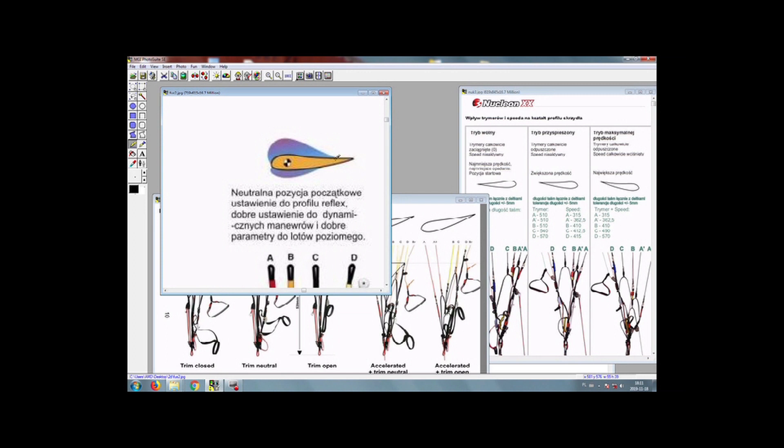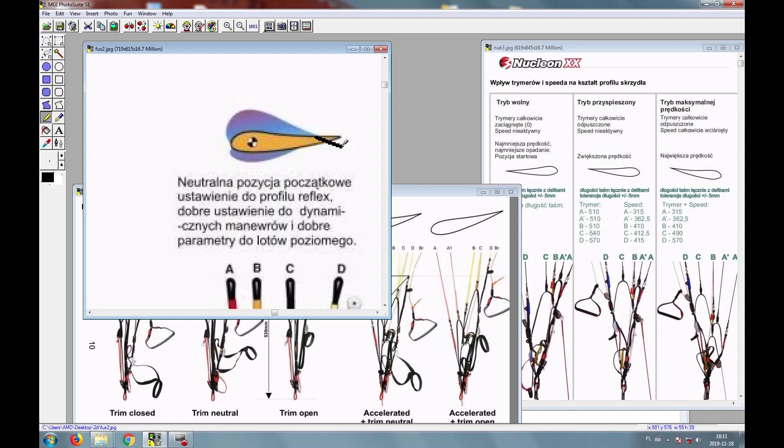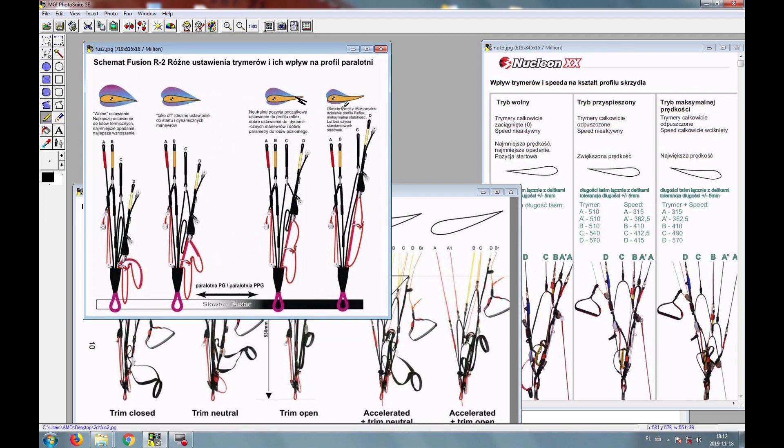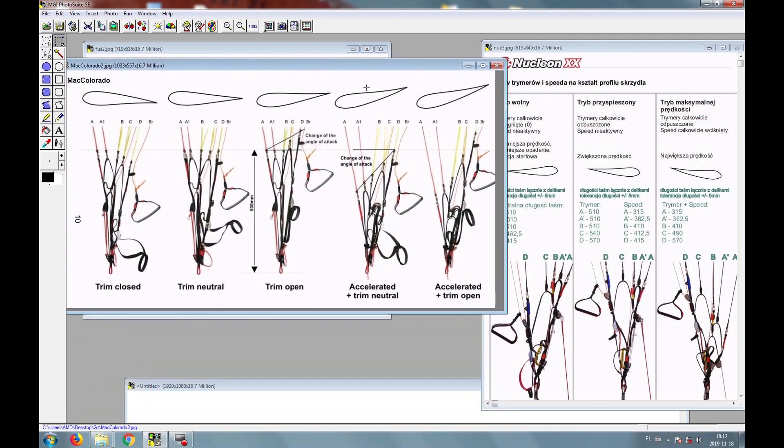When the glider is in neutral trim position, we can use the steering with no problem. We pull down the steering to this position or even deeper, and still the canopy is working perfectly with no problem with the airfoil. In the position when we get the trimmers loose to gain speed, the trailing edge of the glider goes up very high and pulls our steering system. The steering line is pulled so hard and is so tended. Let's see the Colorado example.